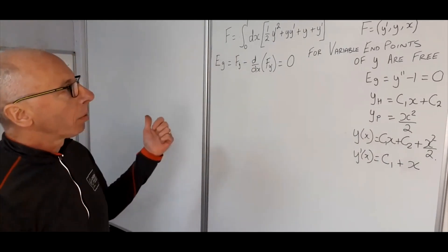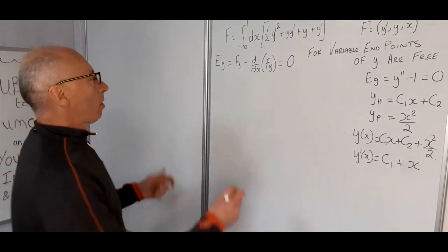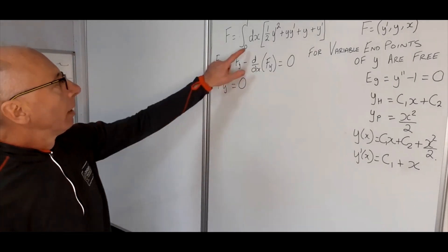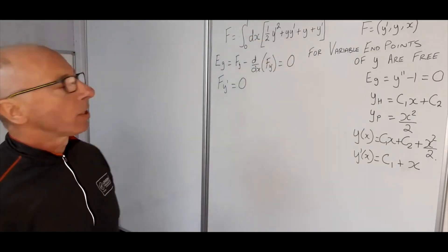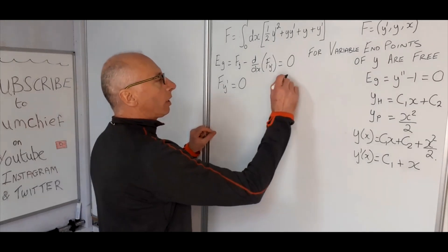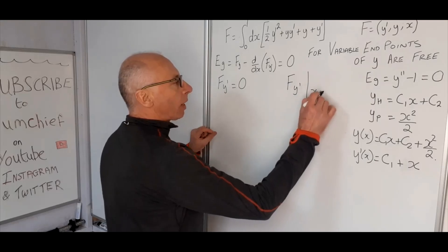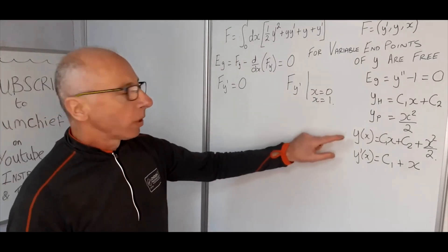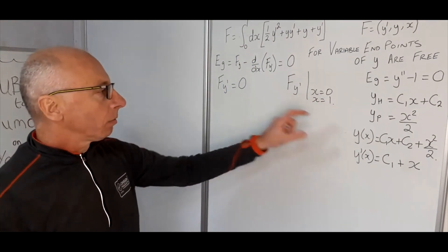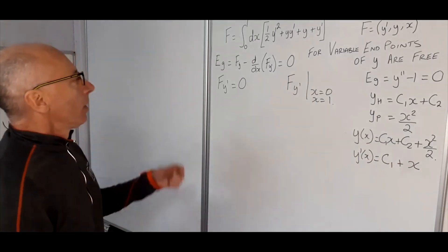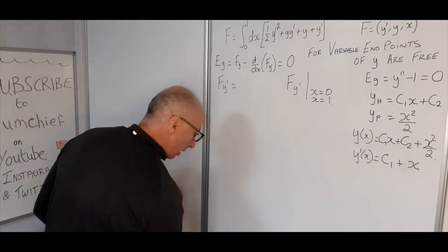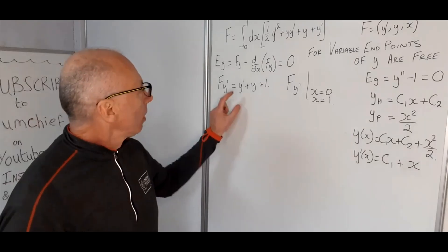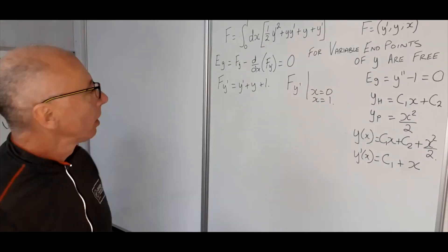As this is a variable endpoint problem, we're interested in when the functional is stationary. We want ∂F/∂y' equal to 0 at x = 0 and x = 1, since those are our limits of integration and the points we're interested in. So we plug in the values of our functions at x = 0 and x = 1 into ∂F/∂y' = y prime + y + 1.